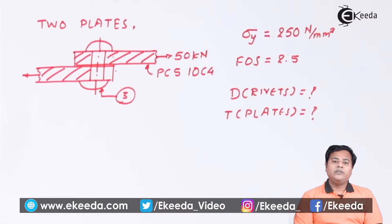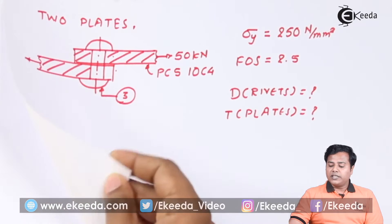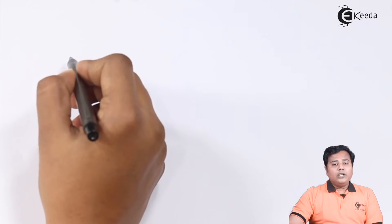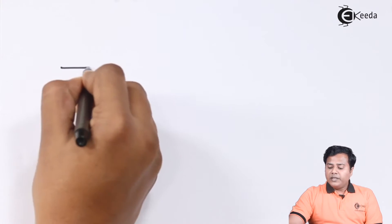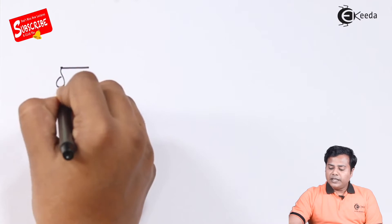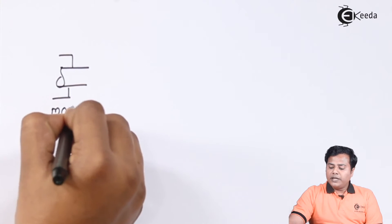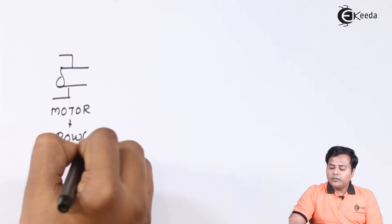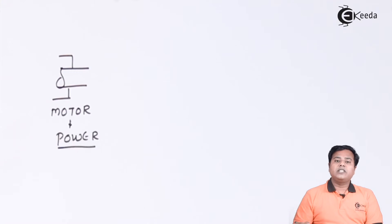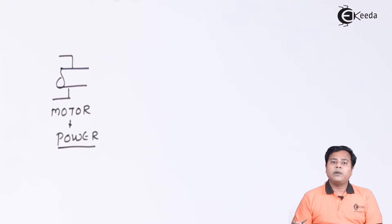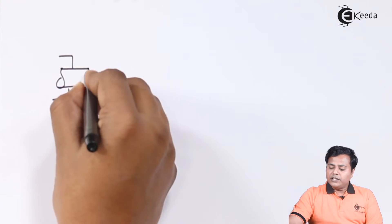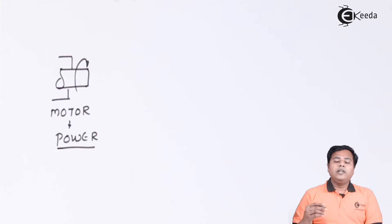A cotter joint is a kind of joint used to join different shafts. The application of cotter joint is very important for our understanding. When power transmission is to be done, there is one end where the motor is attached. This motor provides the power, and most motors give us rotational power. In such shafts, when rotational power is given, we need to deliver this power to the other end.